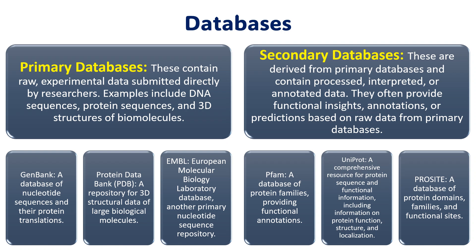The third category is called composite databases. Data entered into these composite databases is first compared and then filtered based on desired criteria. The initial data are taken from the primary database and then merged together based on certain conditions. These composite databases help in searching sequences rapidly and contain non-redundant data. Examples include OWL, NRD, SwissProt, and TrEMBL.